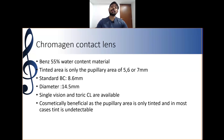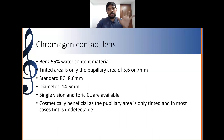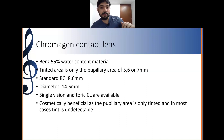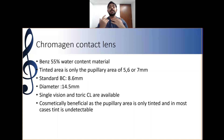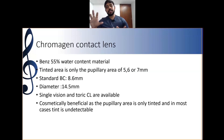The tinted area covers only the pupillary zone, which is five, six, or seven millimeters in diameter. The pupil size determines the diameter of the tint to be prescribed. The standard base curve used is 8.6 mm and the diameter is 14.5 mm. Both single vision and toric contact lenses are available. They are cosmetically beneficial as only the pupillary area is tinted.